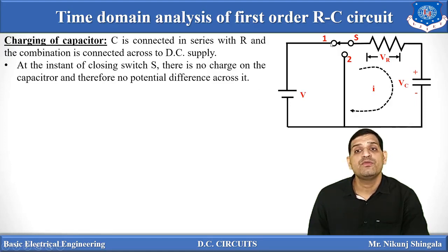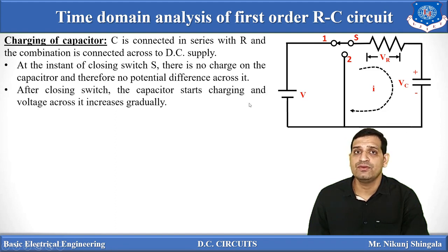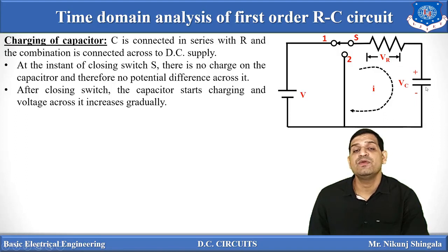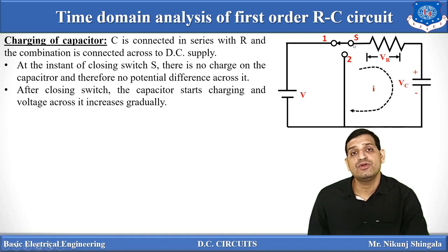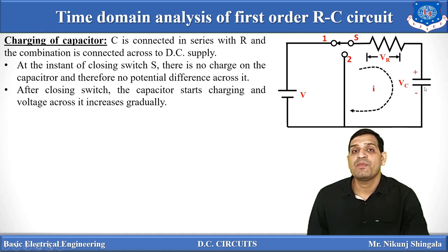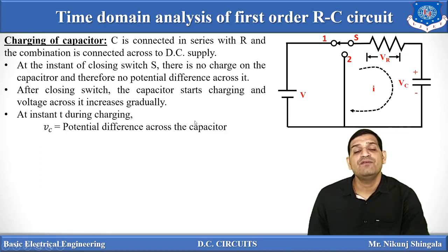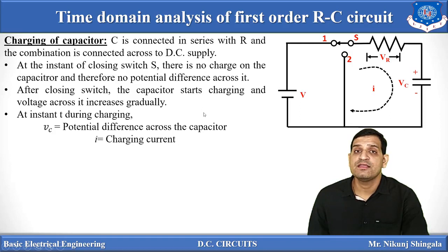Now at time T equal to zero, the switch is closed. Current will start to flow, and as current starts to flow, there is a potential difference across the capacitor. So capacitor voltage will increase, but it will increase gradually. At T equal to zero, that is the initial condition, VC will be zero. After that capacitor voltage increases gradually. Suppose after time T we have VC as the potential difference across the capacitor, I is the charging current, and Q is the charge on the capacitor.